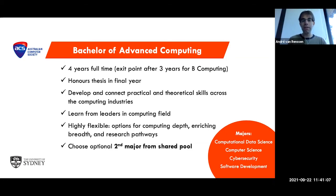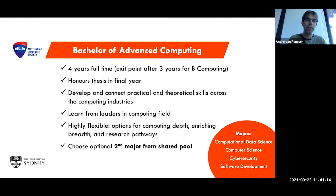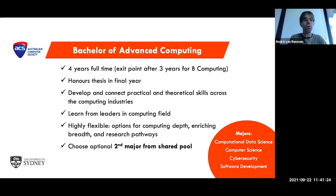Our final major is software development, where you are basically taught how to develop large software systems. All of these majors share some units — they are related to each other; it's all computer science — but they each focus on a very different, very specific aspect of computer science. So it really matters which one of these you pick.